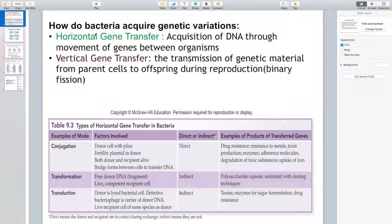When it comes to bacteria, they acquire genetic variation either through horizontal gene transfer, which means that they acquire DNA through movement of genes between different organisms. We will talk about that in a bit more detail in a second.